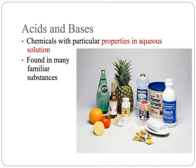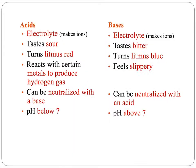Acids and bases are chemicals that have particular properties, and generally we talk about them as having properties in aqueous solutions. They are found in many familiar substances, some of which we eat, and some which we clean with. They are both electrolytes — they both will make ions in solution, and that means that acids and bases can both conduct electricity.